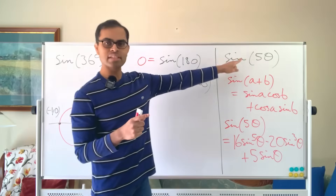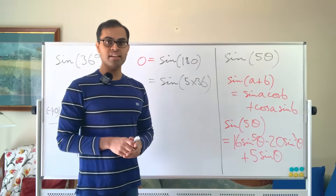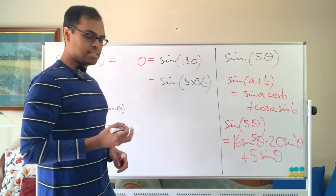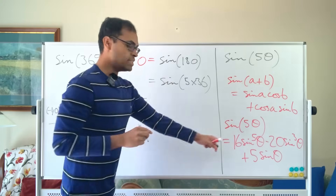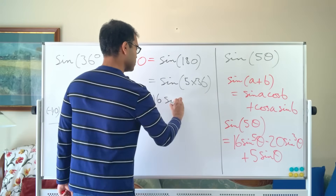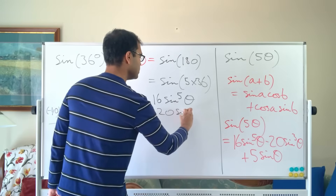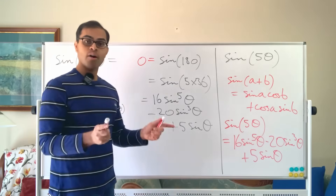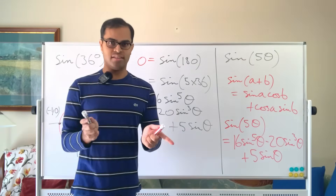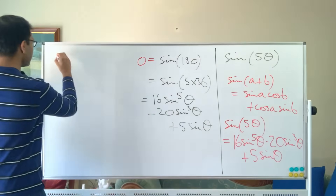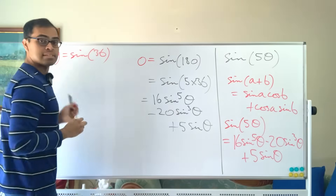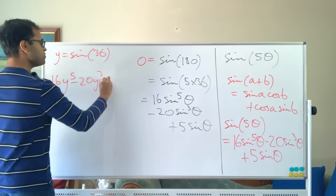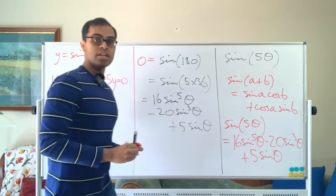Knowing sine(5θ) means we get the equation 0 = sine(5×36). Setting θ = 36, since sine(180) = 0, we get 16sin⁵θ − 20sin³θ + 5sinθ = 0, where θ = 36 degrees. Sine of 36 is a solution of this equation. Putting y = sinθ, we get: 16y⁵ − 20y³ + 5y = 0. That's the equation we want to solve for y.